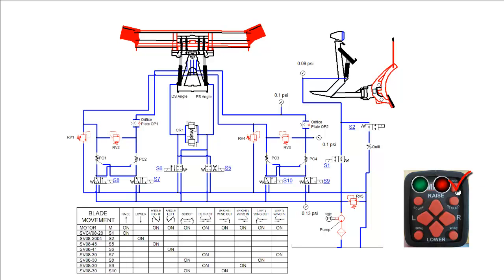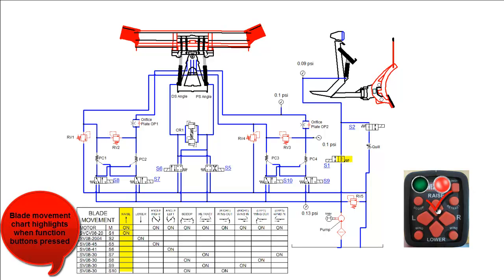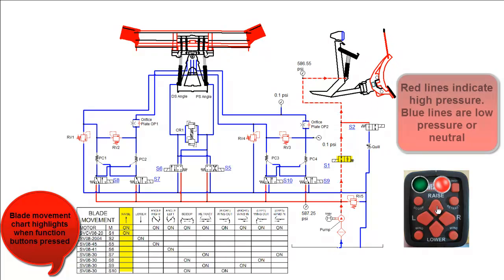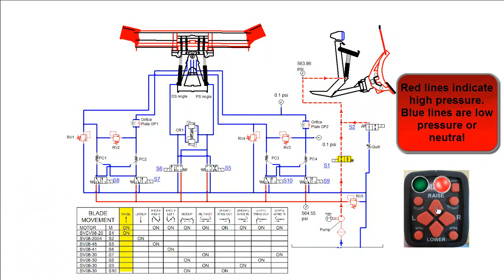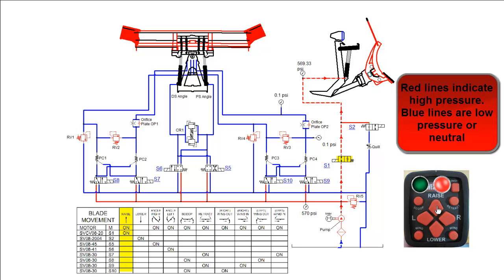We will start by pressing the on-off button of the snowplow control. The red indicator light illuminates, and the plow is ready for action. Pushing any function button, except lower, will activate the motor, which turns the pump, pulling fluid from the reservoir, through the filter, and creates flow, which is indicated by the moving arrows in the hydraulic diagram.